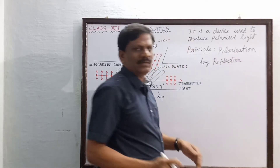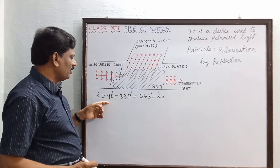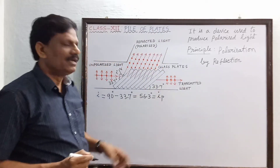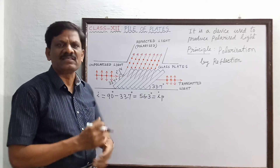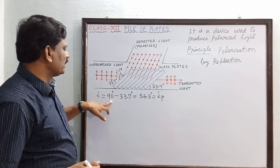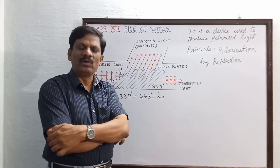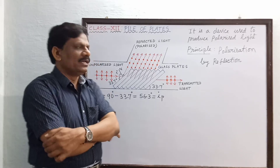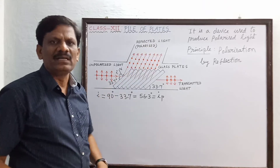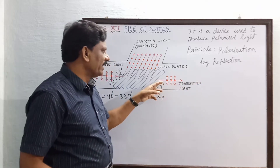For the examination, the third point is the angle of inclination of the plates, which is 33.7 degrees with the axis of the tube. Hence the angle of incidence will be 90 minus 33.7 equals 56.3 degrees, which is equal to the polarizing angle. At this angle of incidence, the reflected light will be completely polarized.